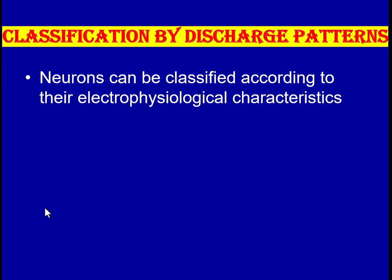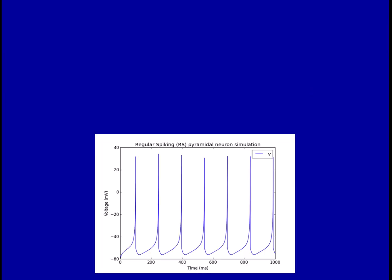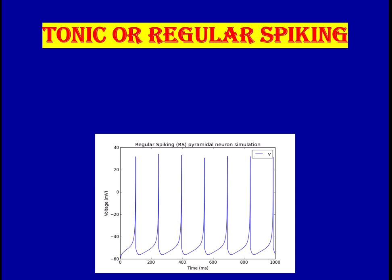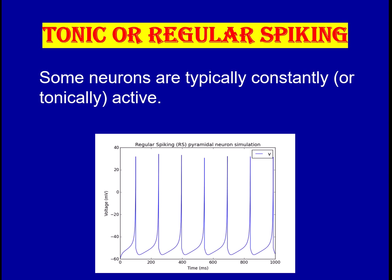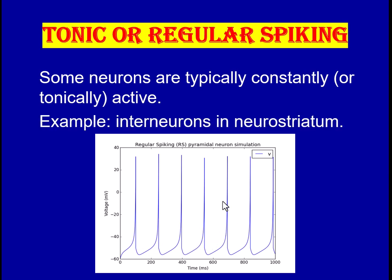Neurons can also be classified according to their electrophysiological characteristics, known as classification by discharge pattern. Tonic or regular spiking neurons are constantly and tonically active, producing action potentials all the time with equal timing between spikes. These regular spiking neurons are usually present in the neostriatum, which is part of the basal ganglia.